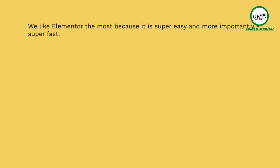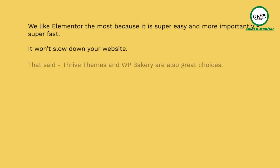We like Elementor the most because it's super easy and super fast. As you add more plugins to your WordPress site, it can slow things down. When we tested things, we found Elementor has a lot of features but not a lot of heavy code, so it runs very fast and won't slow your website down. Thrive Themes and WP Bakery are also really good choices. Let's hop over to those websites.